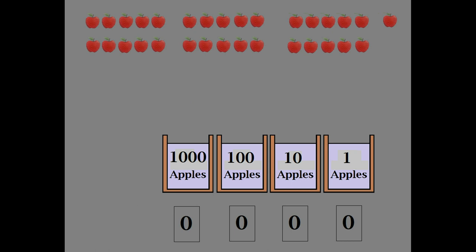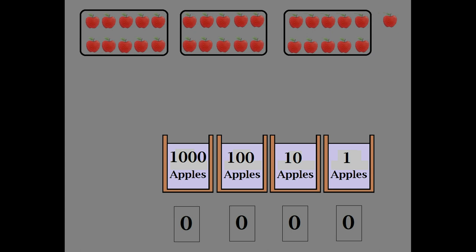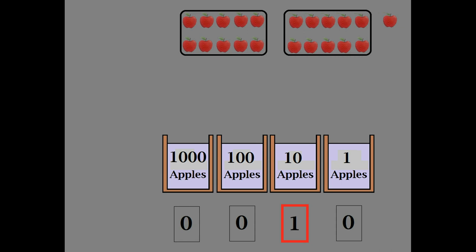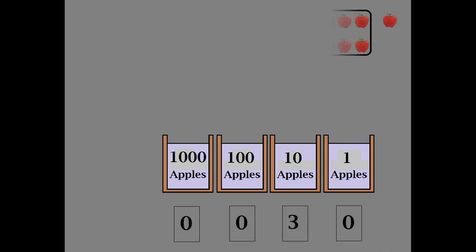Let's start filling buckets. We want to fill the largest bucket we can first. It's pretty obvious we don't have 100 apples, so we'll skip this bucket. Let's start filling the ten apples bucket. Sort your apples into groups of ten. Dump the first group into the bucket. When you do this, increase the counter by one. The second group goes in, then the third group. We have fewer than ten apples, so we'll put all the remaining apples into the one apple bucket. And there you have it — using the decimal system, we have 31 apples.